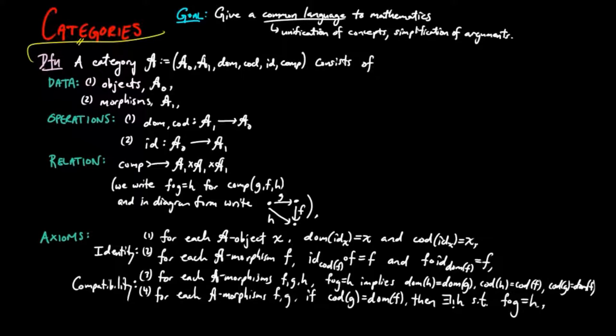And this makes the composition relation into a partial operation, which is how it is usually presented. And the last axiom is the associativity axiom.